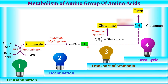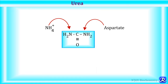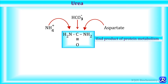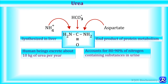The ammonium ion is converted into urea by the metabolic reactions of the urea cycle, and this process occurs in the liver. Urea is synthesized in the urea cycle; it has two nitrogen atoms — one derived from free ammonium ion and the other from the amino acid aspartate. The carbon atom is supplied by bicarbonate ions, the hydrated version of carbon dioxide. Urea is the end product of protein metabolism, synthesized in the liver, and accounts for 80–90% of nitrogen-containing substances in urine. Humans excrete about 10 kg of urea per year.